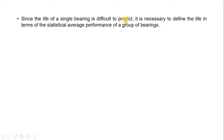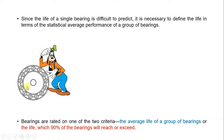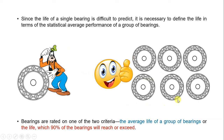Since the life of a single bearing is difficult to predict, it is necessary to define life in terms of the statistical average performance of a group of bearings. Generally, for a single bearing, predicting its life is quite tough because the same bearing in the same machine will not necessarily fail at the same time every run. So it is very difficult to determine the life of a single ball bearing. Therefore, we will take a group of ball bearings with similar configuration and define life based on the average performance of that group.